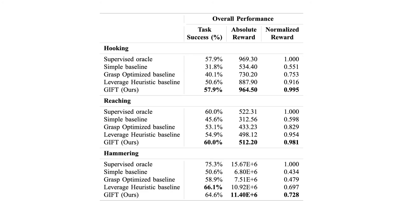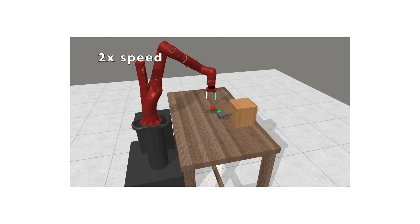Quantitatively, GIFT beats algorithmic baselines on all three tasks and approaches the performance of a human oracle on two of three. Qualitatively, when we inspect rollouts using the predicted grasp and interaction key points, we can see that the predictions usually match task semantics.